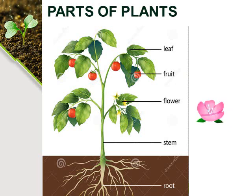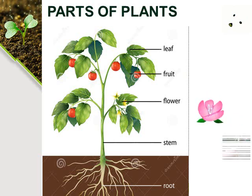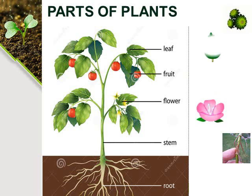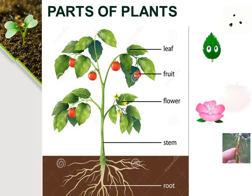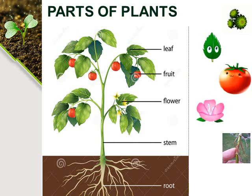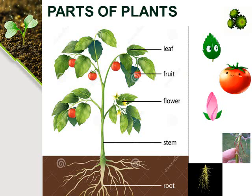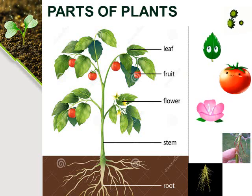Flower: It is the part that produces fruits. Seed: It is the part from which a baby plant grows; it is present in the fruit. Stem: It is the part that carries water and food to all other parts of the plant. Leaf: It is the flat green part that makes food for the plant. Fruit: It is the part that has seeds. Root: It is the part that fixes the plant to the ground; it also takes in water and other things needed by the plant.